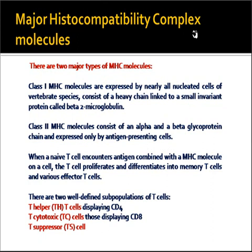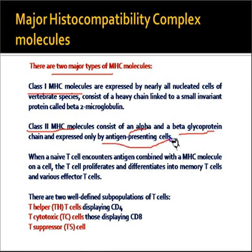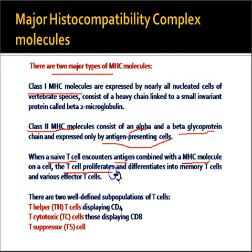Major histocompatibility complex molecules come in two types: Class 1 MHC molecules are expressed by nearly all nucleated cells of vertebrate species and consist of a heavy chain linked to a small invariant protein called beta-2 microglobulin. Class 2 MHC molecules contain an alpha and a beta glycoprotein chain and are expressed only by antigen presenting cells. When a naive T cell — one that has not encountered any antigen before — encounters an antigen combined with an MHC molecule on a cell, it becomes activated, undergoes proliferation, and differentiates into memory T cells and effector T cells.